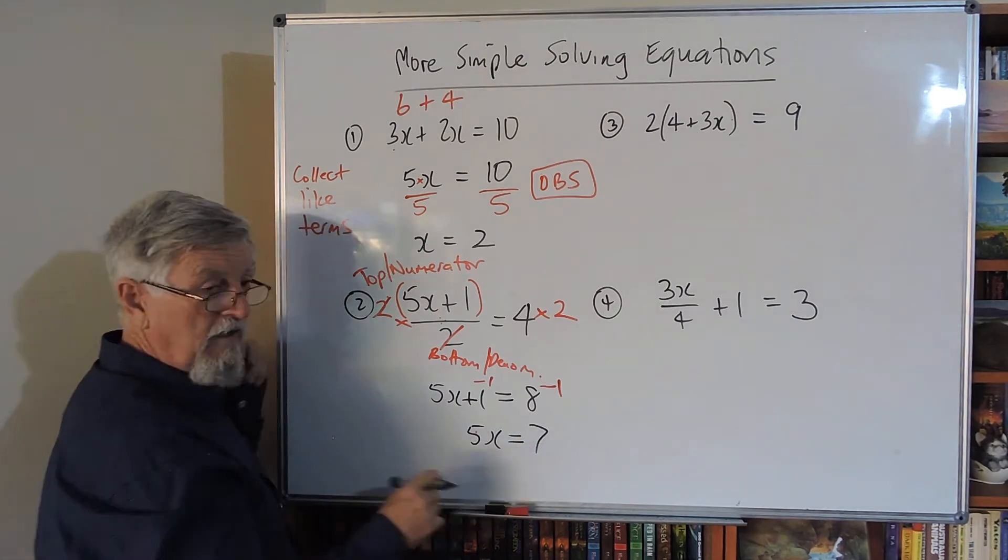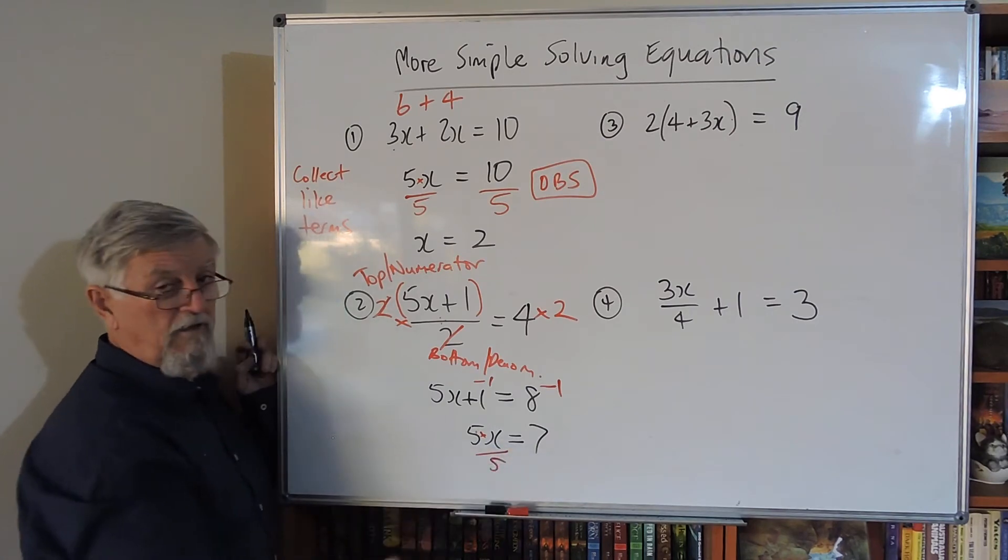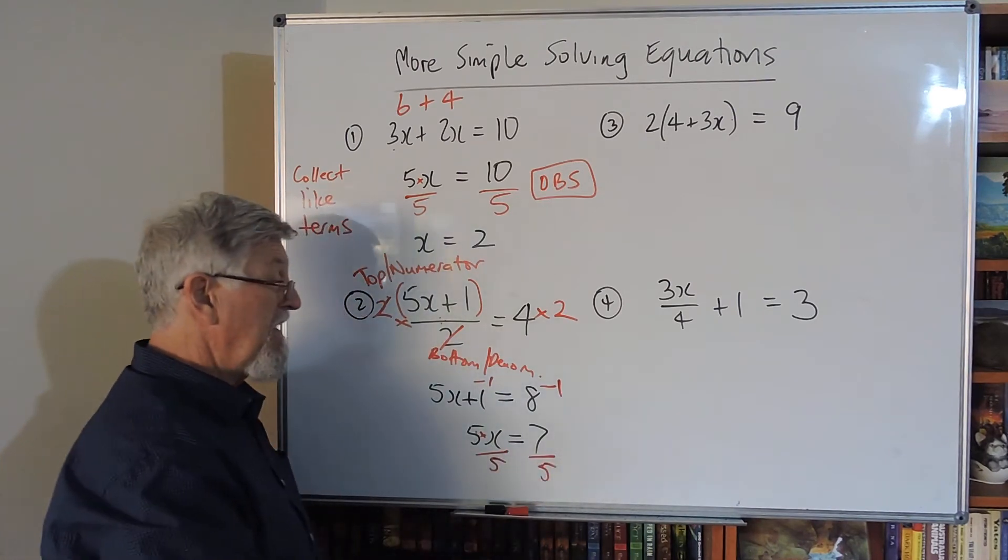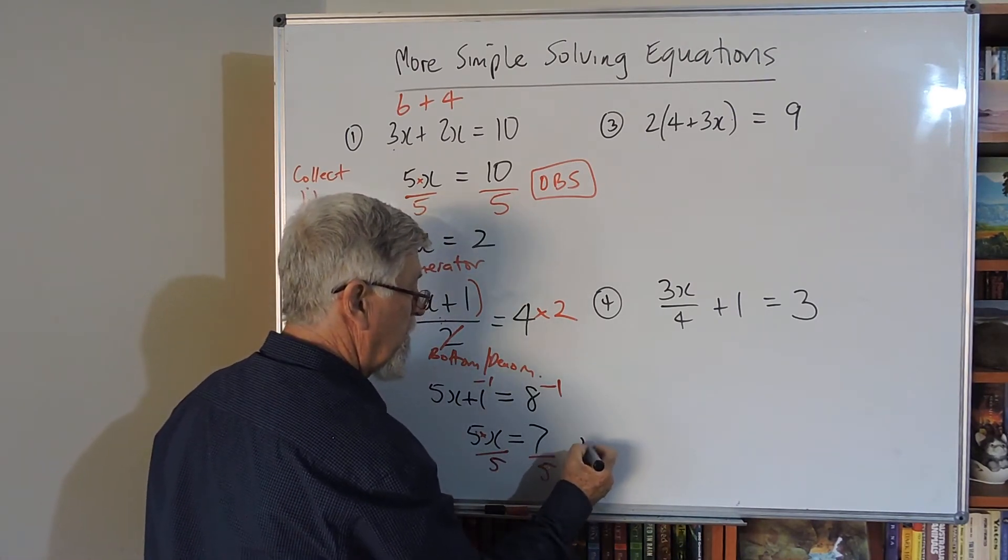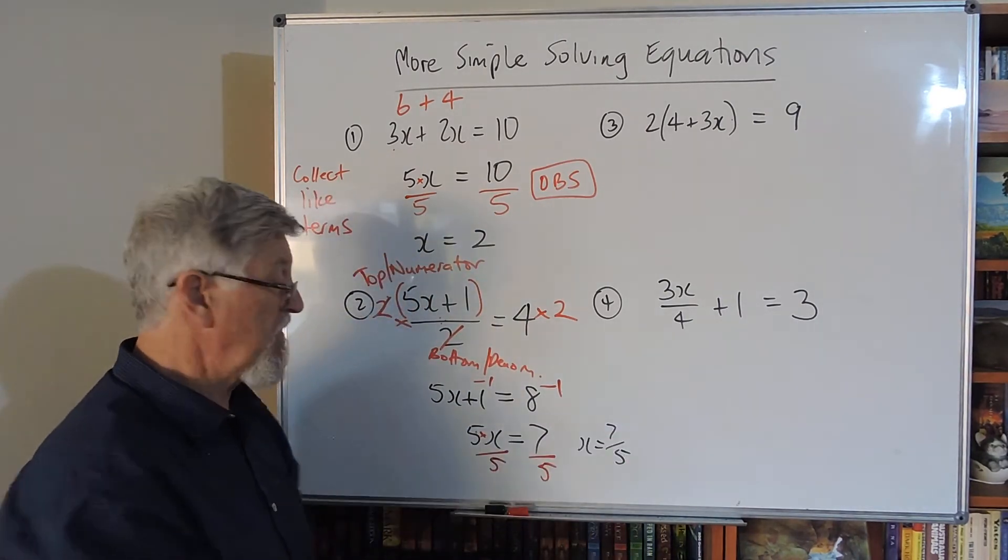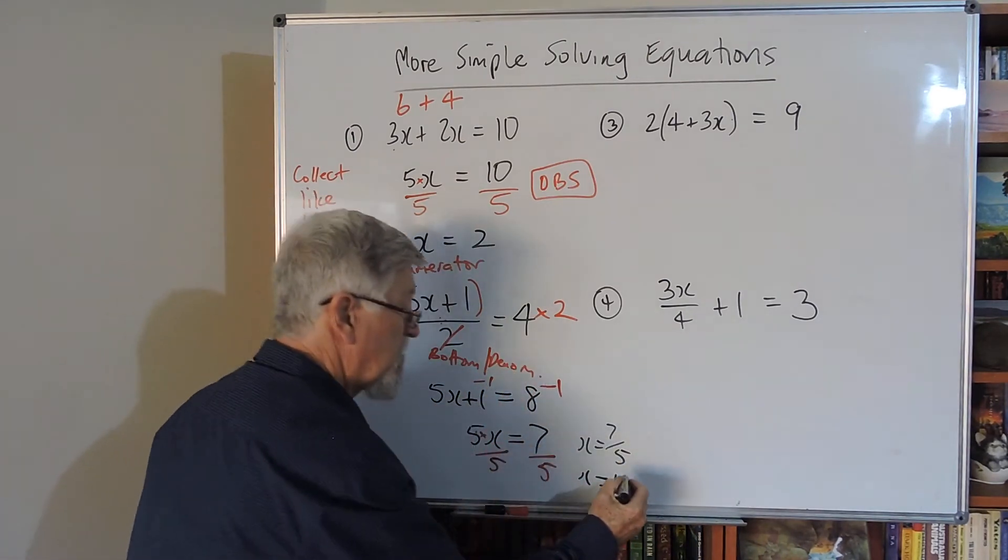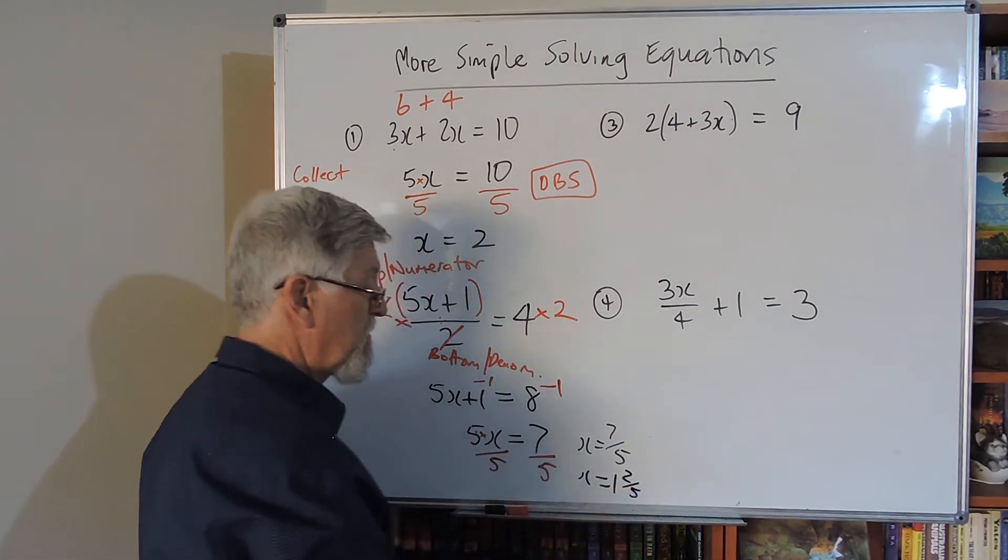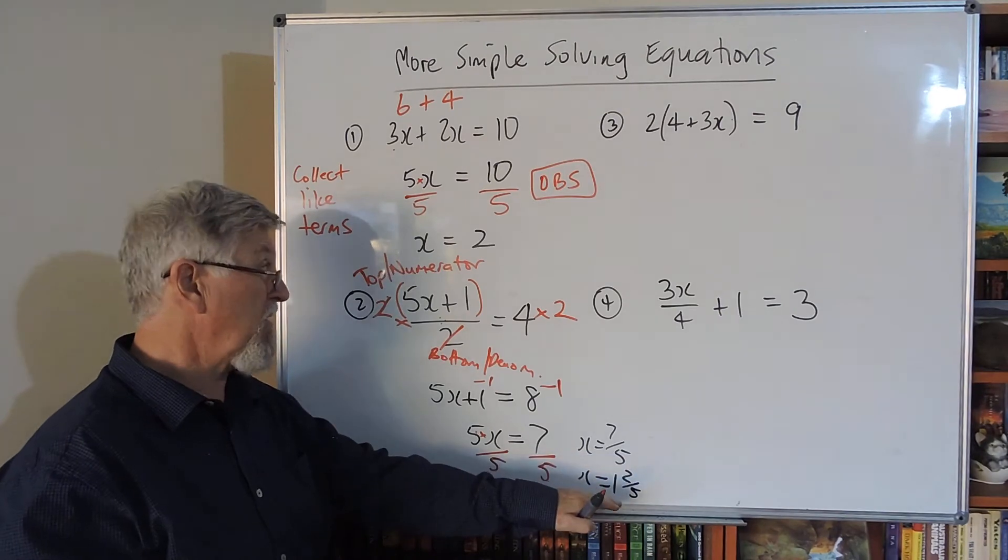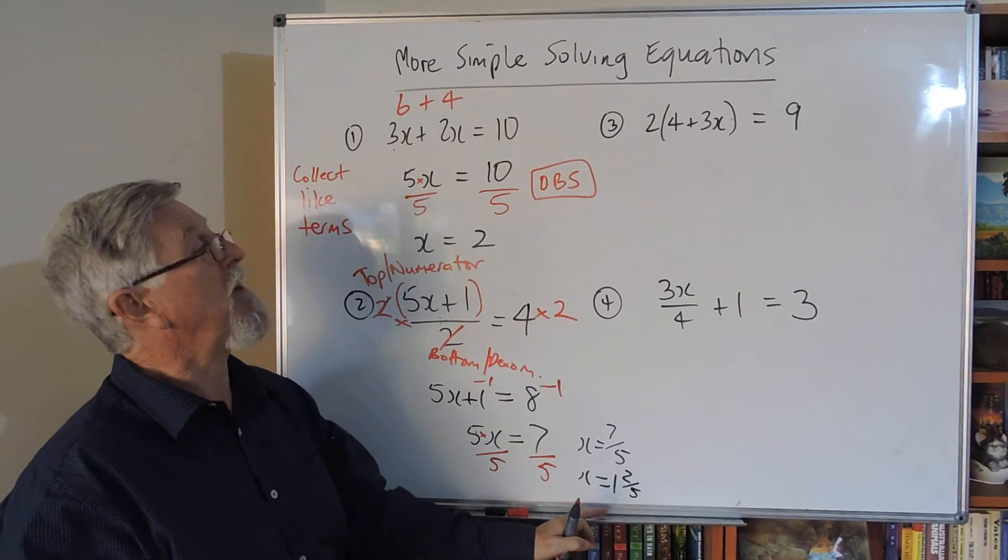The ones are gone, I'm left with 5x = 7. How do I get rid of times 5? Divide by 5. If I do it to this side, I've got to do it to the other side to balance the scales. The answer is 7/5. You could say five goes into seven once with two left over, so 1 and 2/5.